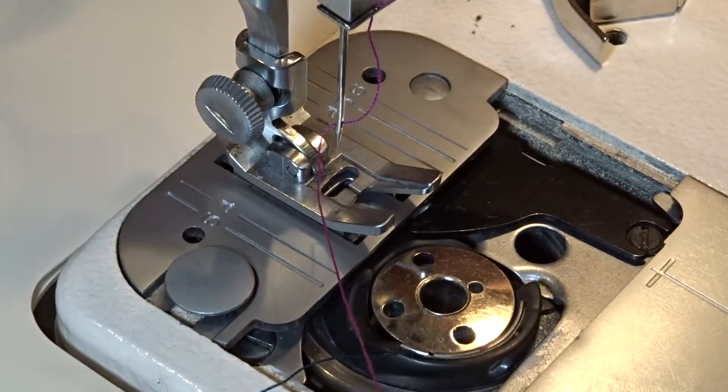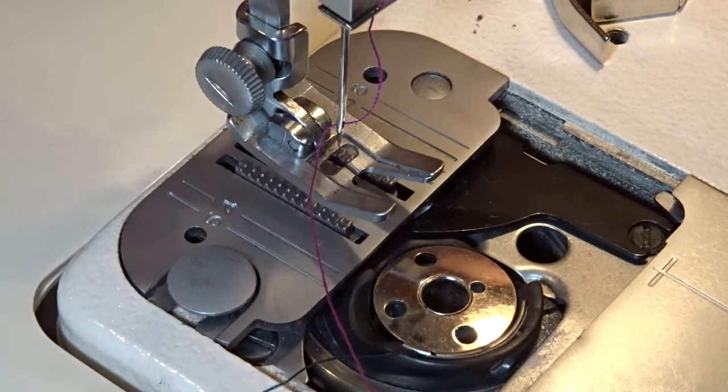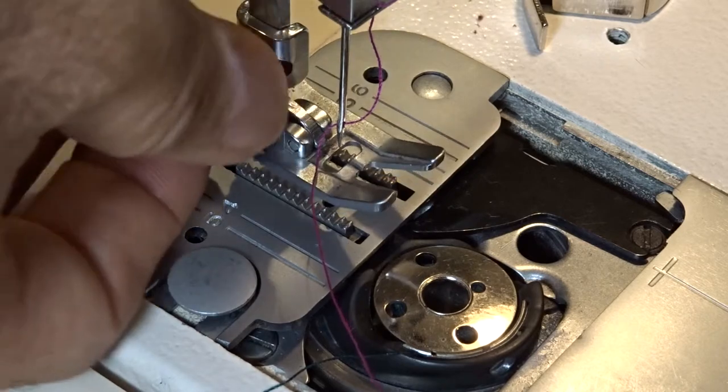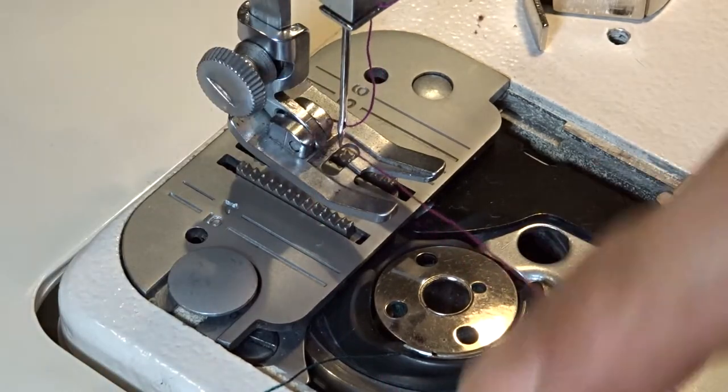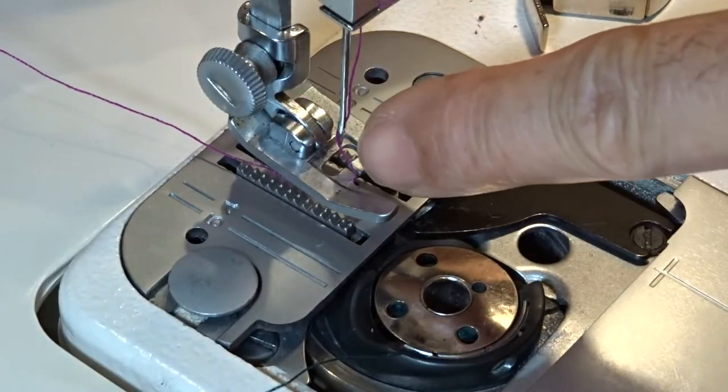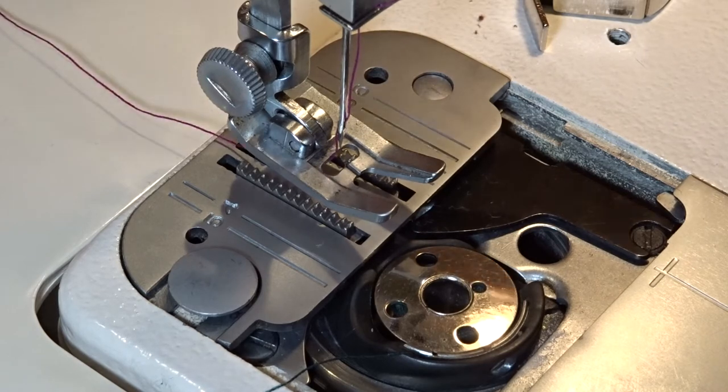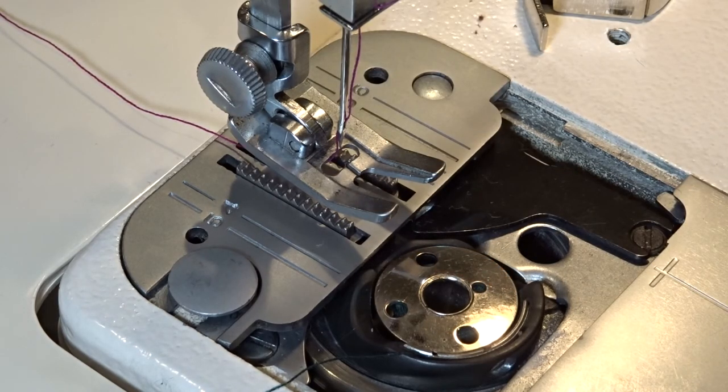Next one is you need to lift up your pressure foot just like so, and make sure, by the way, this is always tight. You just tighten it with your thumb, bring the thread in between the pressure foot backwards like so. Now you need to...